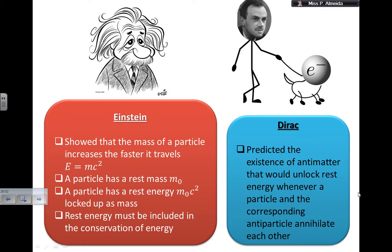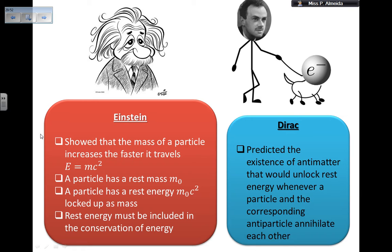Now I'm going to tell you about Einstein and Dirac. Einstein showed that the mass of a particle increases the faster it travels, and he gave us E = mc². He said a particle has a rest mass, referred to as m₀ (m-zero, for stationary), and a rest energy which is m₀c².